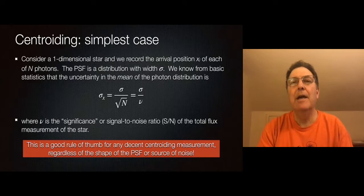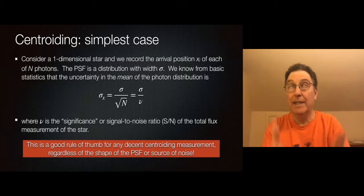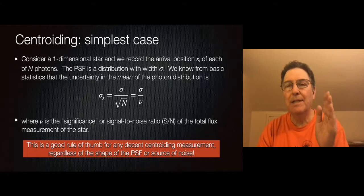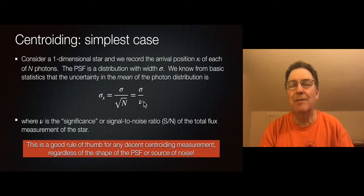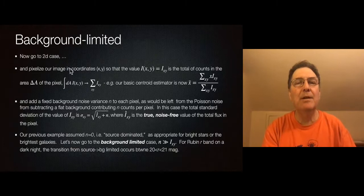In this next part we look at methods for turning a star image into an XY pixel position. We saw that in a simplified single-photon case, the centroid estimate is the average of all photon X-positions, with error σ_x = σ_PSF / ν where ν is the square root of the photon count. Now let's move to more realistic and complex cases.